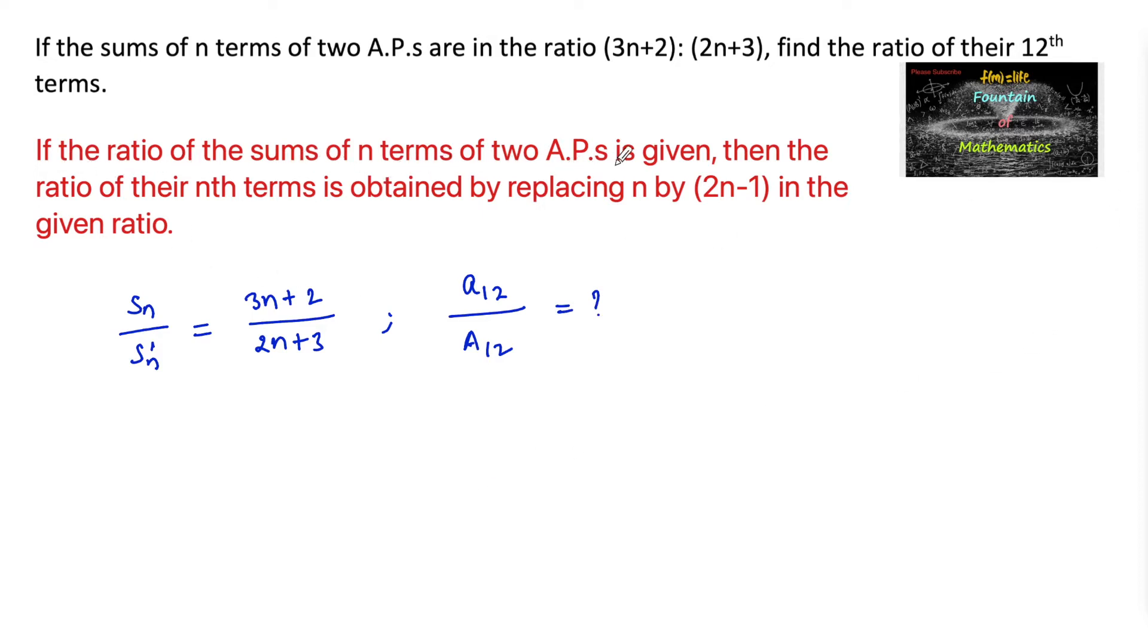If the ratio of the sums of n terms of 2 APs is given, then the ratio of their nth terms is obtained by replacing n by (2n-1). So replacing n by (2n-1) means here n is equal to 12.